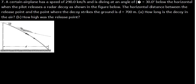When the pilot releases a radar decoy as shown in the figure below, the horizontal distance between the release point and the point where the decoy strikes the ground is 700 meters. So they're talking about the range now.